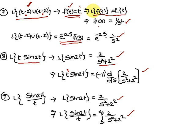Apply Laplace transform to both sides: Laplace of f(t) = Laplace of t = 1/s². So f̄(s) = 1/s². Using the formula e^(-as)·f̄(s) with a = 2 and f̄(s) = 1/s², substitute into the formula to get the answer.